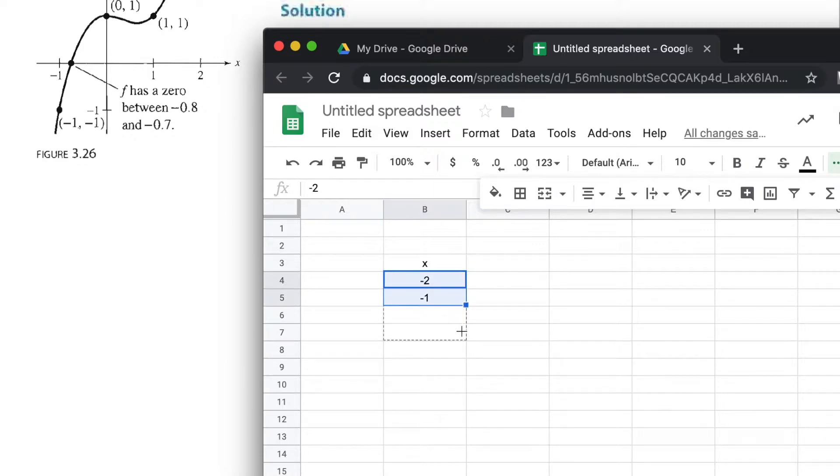Now we're going to program f(x), so I'm going to title this f(x). Let's go ahead and make f(x) act on -2.